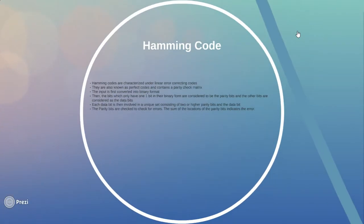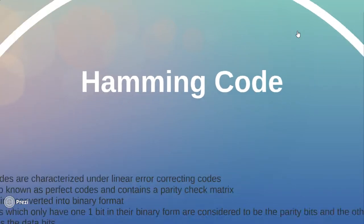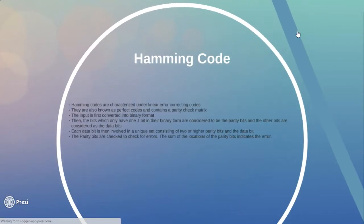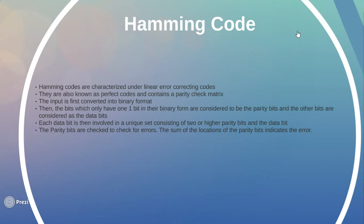Now let's look a bit deeper into the Hamming codes. The Hamming codes are characterized under linear error correcting codes. They are also known as perfect codes and contain a parity check matrix.